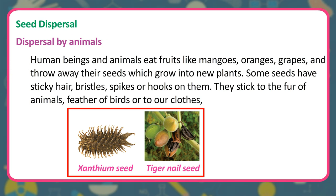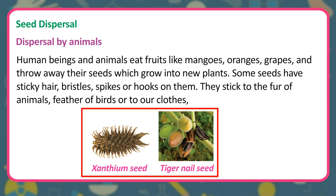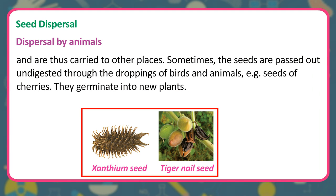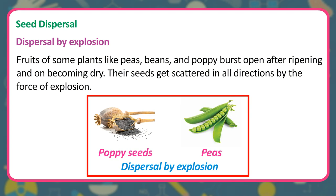Dispersal by animals: Human beings and animals eat fruits like mangoes, oranges, and grapes and throw away their seeds, which grow into new plants. Some seeds have sticky hair, bristles, spikes or hooks that stick to the fur of animals, feathers of birds, or to our clothes, and are carried to other places. Sometimes seeds are passed out undigested through the droppings of birds and animals — for example, seeds of cherries — and germinate into new plants. Dispersal by explosion: Fruits of some plants like peas, beans, and poppy burst open after ripening and on becoming dry, and their seeds get scattered in all directions by the force of explosion.